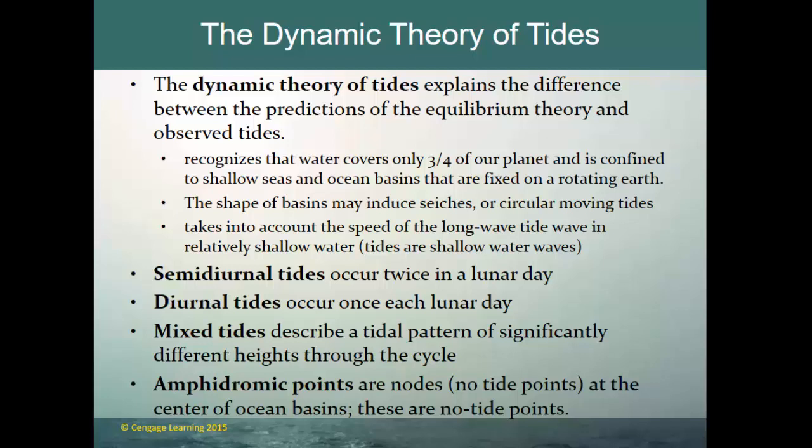Diurnal means daily — just as nocturnal means nightly. Semi-diurnal means twice a day; diurnal means once a day; and mixed tides describe a tidal pattern with significantly different highs and lows through a cycle. Semi-diurnal tides occur twice in a lunar day; diurnal tides occur once each lunar day.